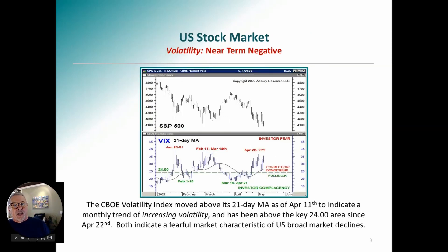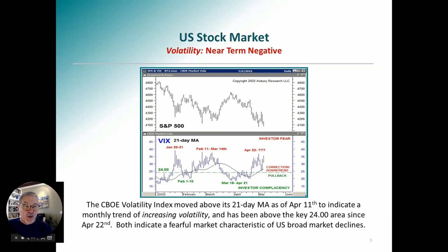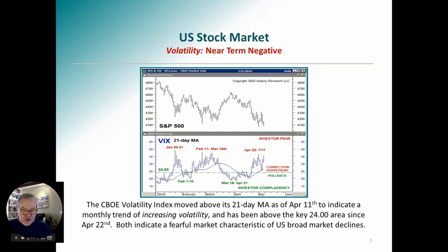Let's look at a few more indicators. This is the VIX. We see the 24 area in the VIX as a line of demarcation between just a normal pullback you could buy and a correction or downtrend you may want to avoid. We've been above 24 in the VIX since April 22nd — about 10 days after both our tactical models went to risk off. As long as the VIX can't get back below 24 and stay there, we're going to be looking at rallies with a lot of skepticism.